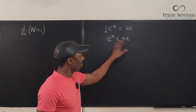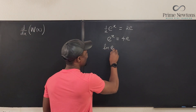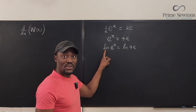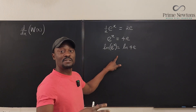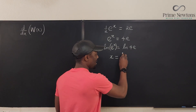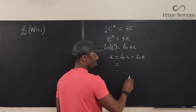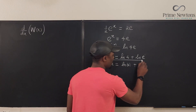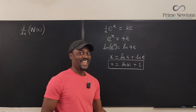Almost done. I can take the natural log of both sides: ln of e to the X equals ln of 4e. The natural log undoes what e does — it's the inverse of the exponential function — so we get X on the left. On the right, ln of 4e splits into ln of 4 plus ln of e, and since ln of e equals 1, the answer is X equals ln(4) + 1.